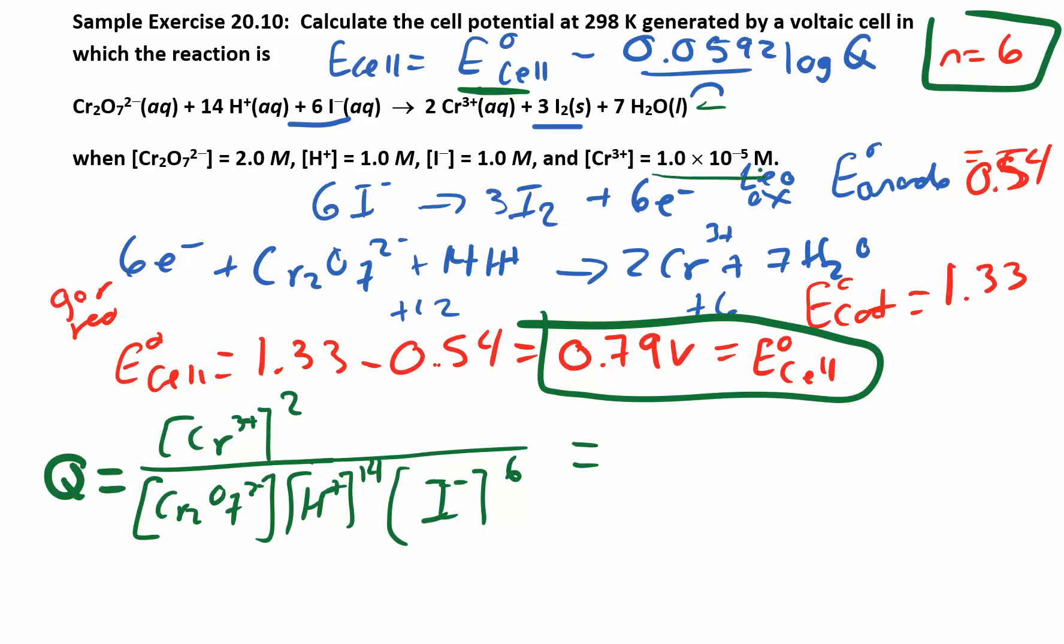Now I can plug all of that into the Q expression. Chromium 3+ right there, so I want (1.0 × 10⁻⁵)² over 2 times 1 raised to the 14. H⁺ is 1 and I⁻ is also 1. So 1 raised to the 14 is just 1. So really I have (1 × 10⁻⁵)² over 2. So my Q ends up being 5 × 10⁻¹¹.